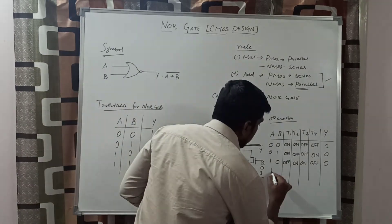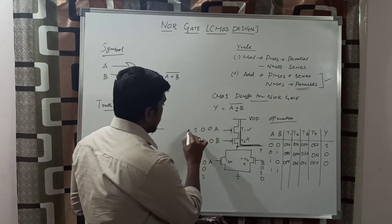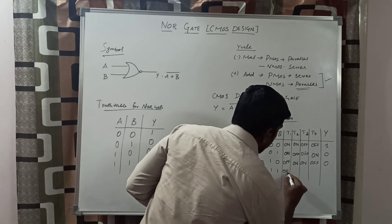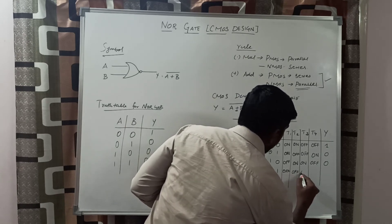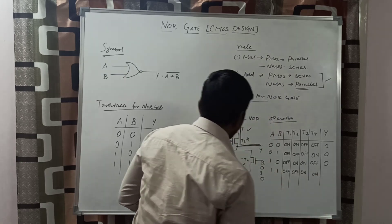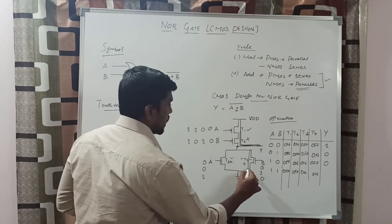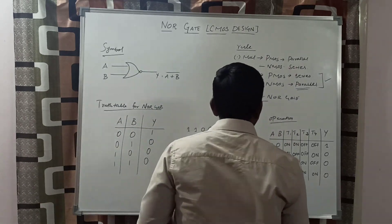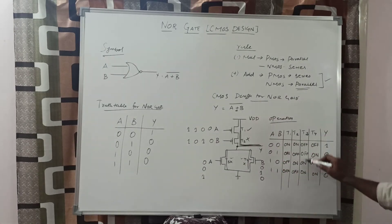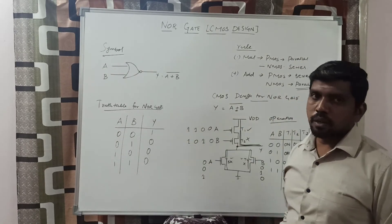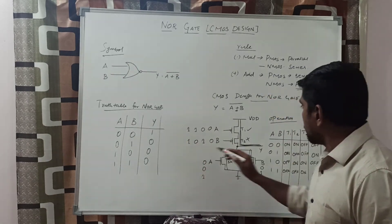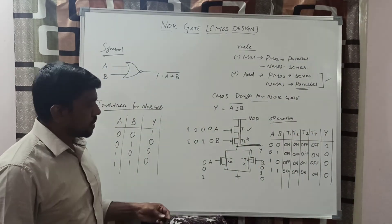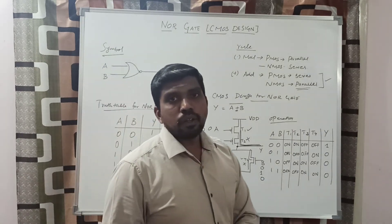Now we check the final input: A equal to 1 and B equal to 1. In this case, both T1 and T2 are off, and T3 and T4 are on. These two transistors turn on, connecting directly to the ground. The response of the circuit is 0. This is the transistor-level logic response table — the truth table of the NOR gate. If you compare these two tables, the result is the same. Both produce the same result. It is a simple conversion of NOR gate operation.